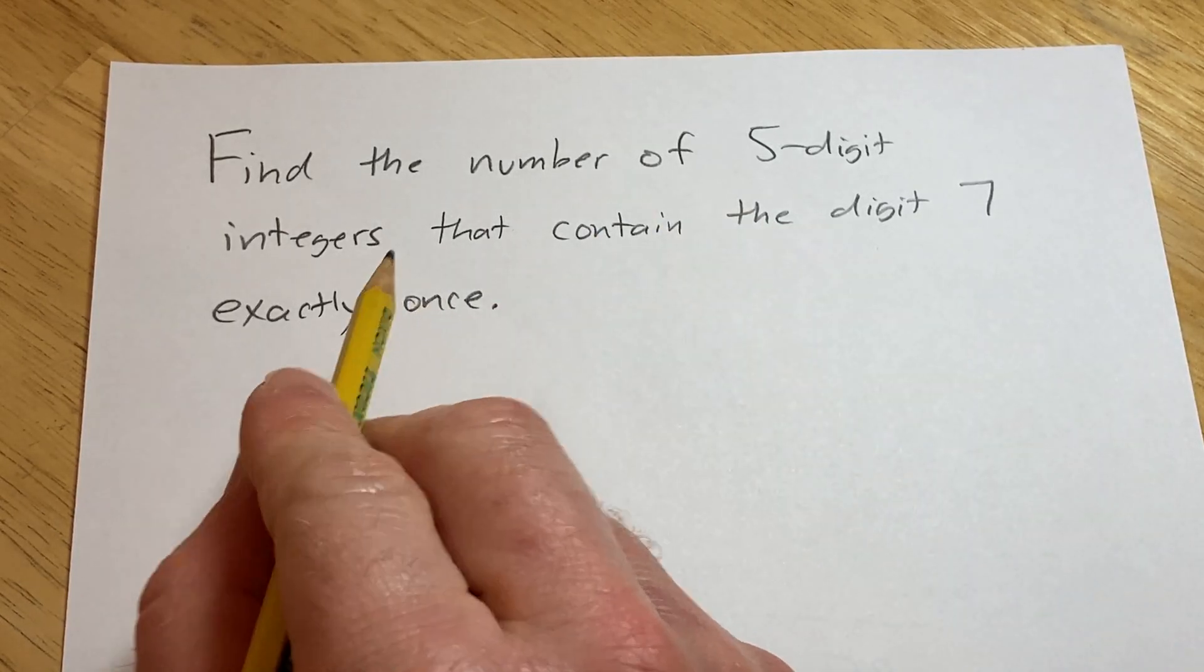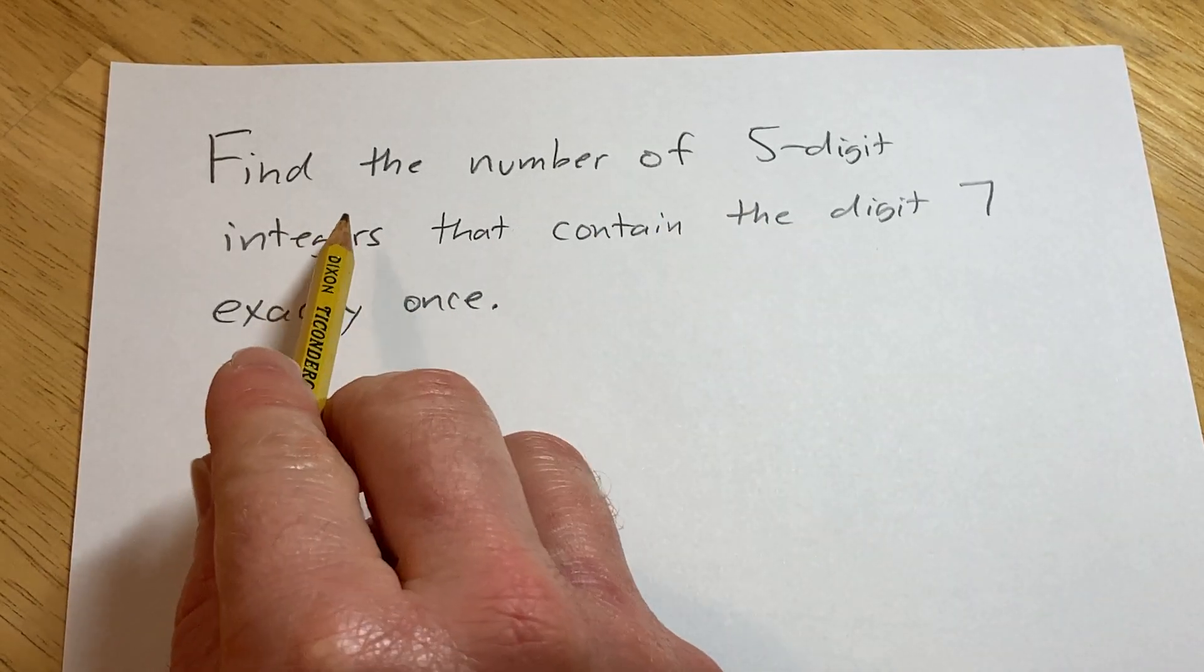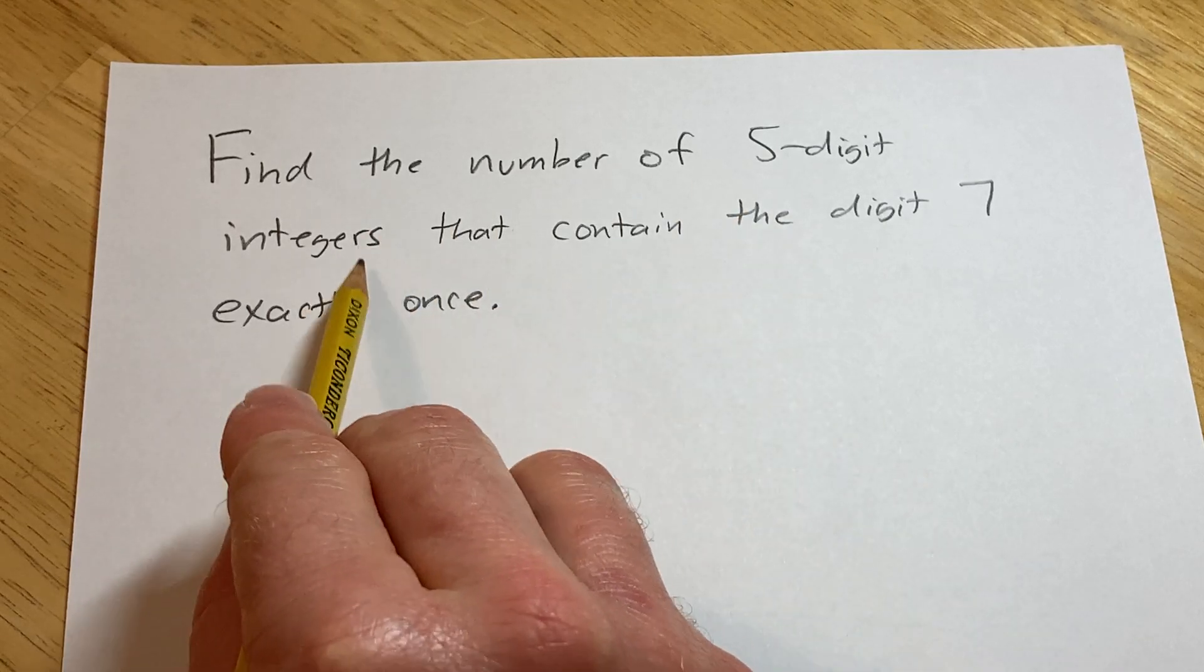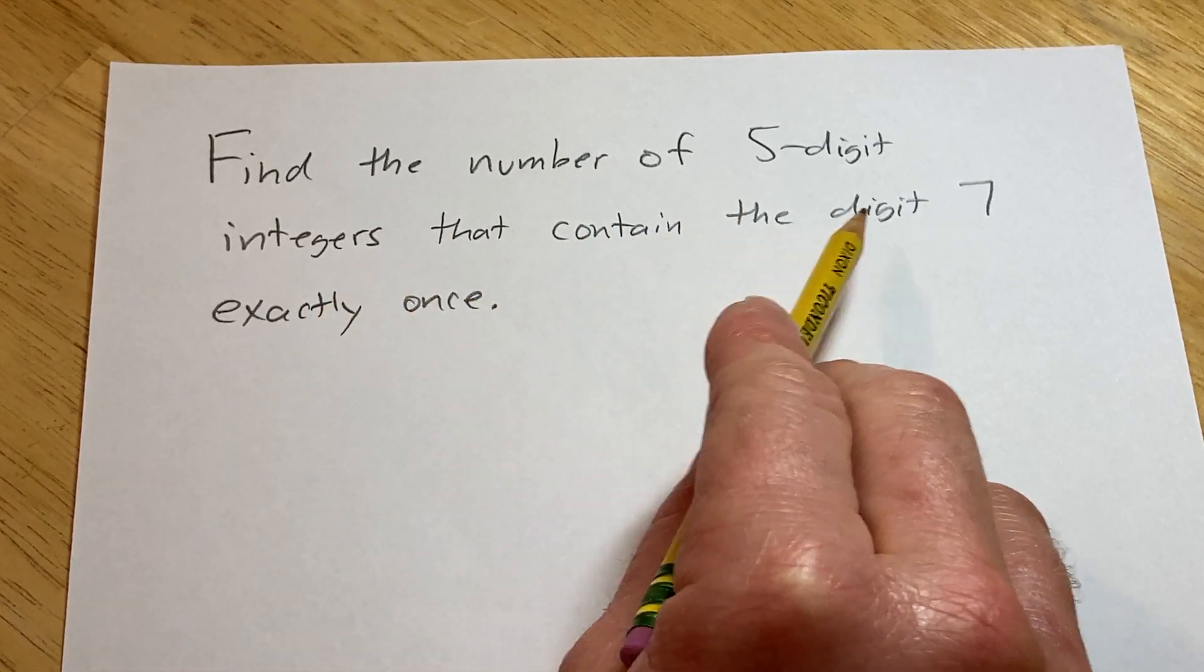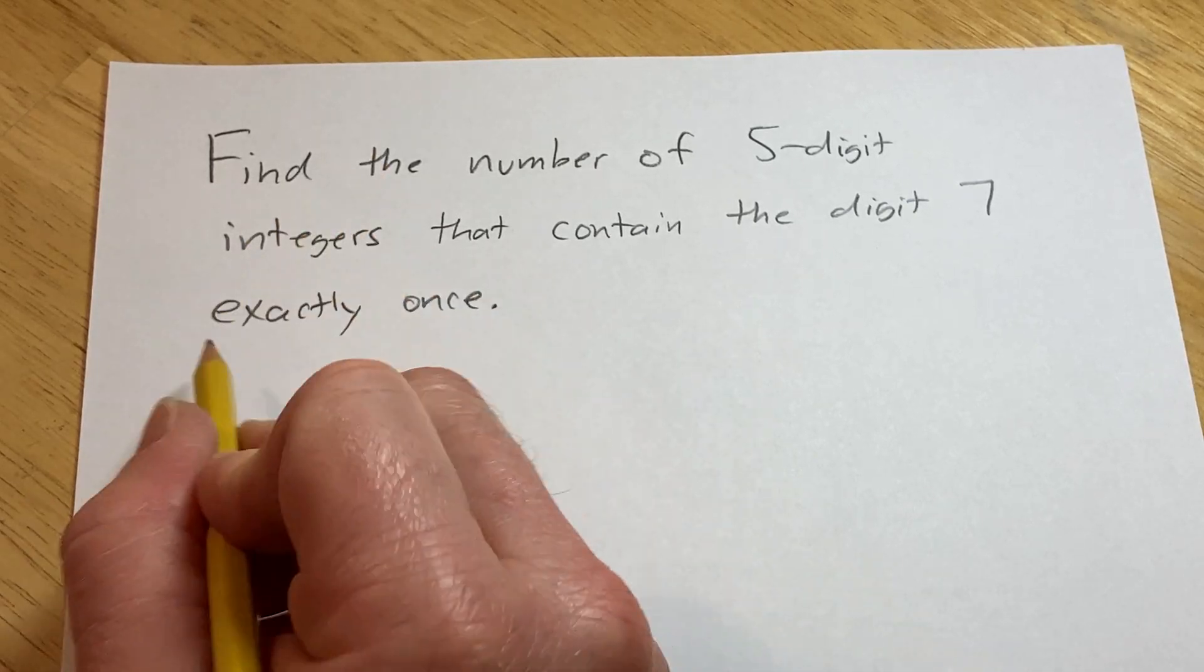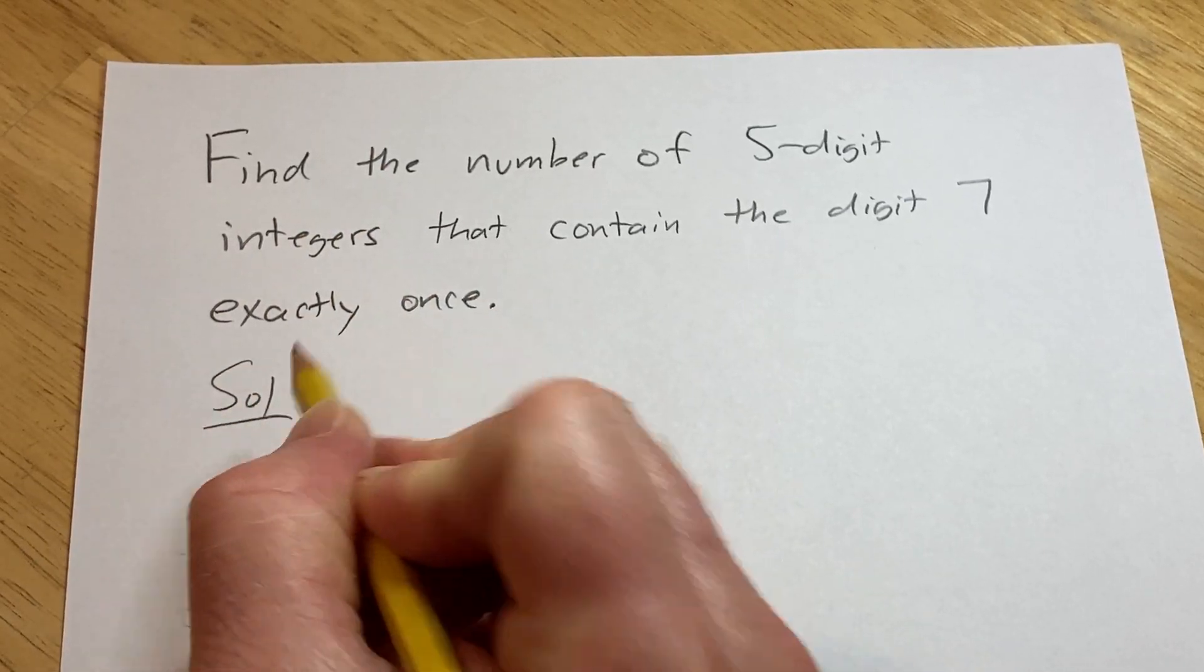In this video we're going to do a counting problem. The question is to find the number of five-digit integers that contain the digit 7 exactly once. Let's think about this very carefully.